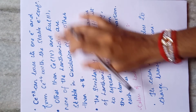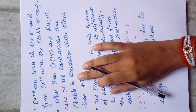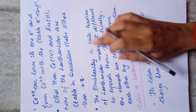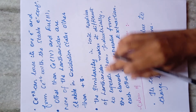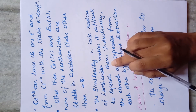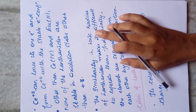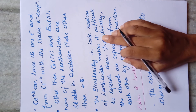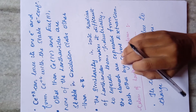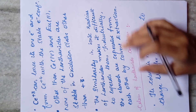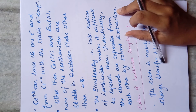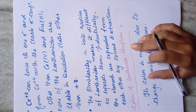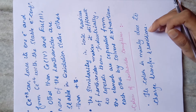The similarity in ionic radii among the lanthanides, due to their common +3 oxidation state, makes it very difficult to separate them even chromatographically. Industrially, the technique used to separate lanthanides is solvent extraction.